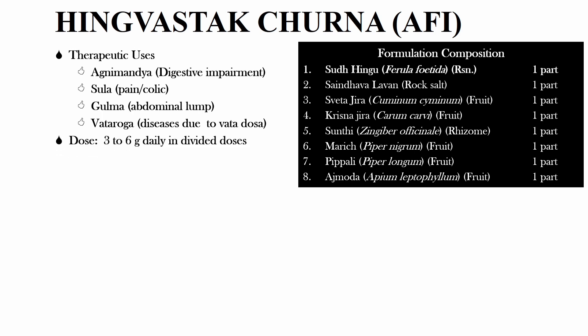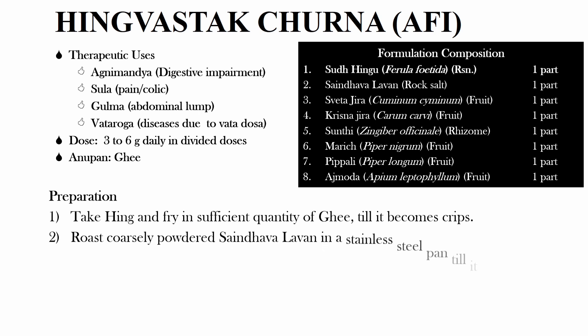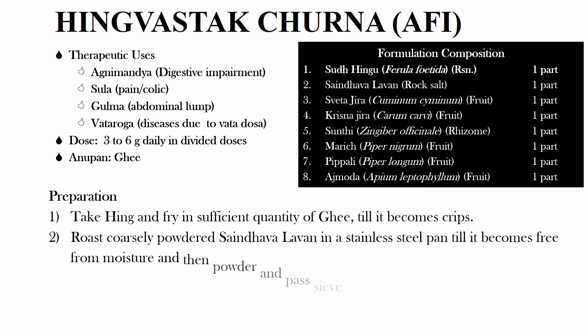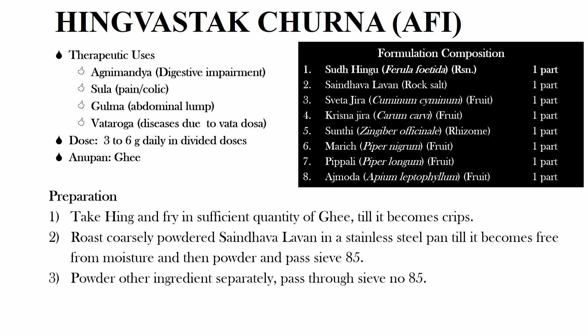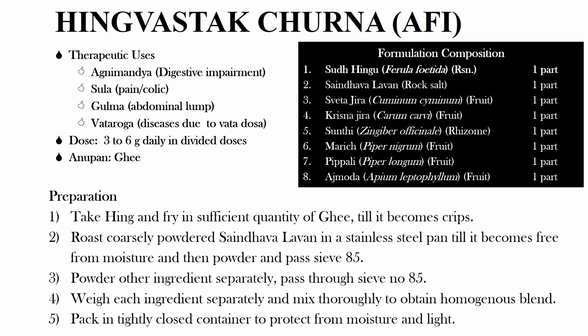Its dose is 3 to 6 grams daily in divided dose. Now coming to the preparation of Hing Vastak Churn. Take Hing and fry in sufficient quantity of Ghee till it becomes crispy and powdered. Roast coarsely powdered Sendhalavan in a stainless steel pan till it becomes free from moisture, then powder and pass through Sieve No. 85. Now weigh each ingredient separately and mix thoroughly to obtain a homogeneous blend. Pack the formulation in a tightly closed container to protect from moisture and light.